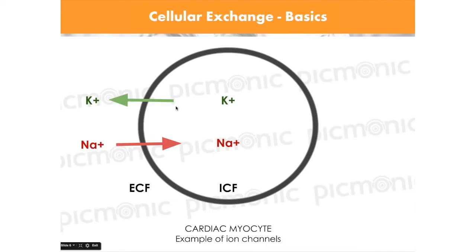Potassium goes out, sodium comes in — there's always a balance. I'm not going to go into physiology calculations with action potentials and whatnot. The key thing to understand is that these electrolytes work with gradients. If there's a lot of potassium outside the cell, what do you think happens to the potassium inside?